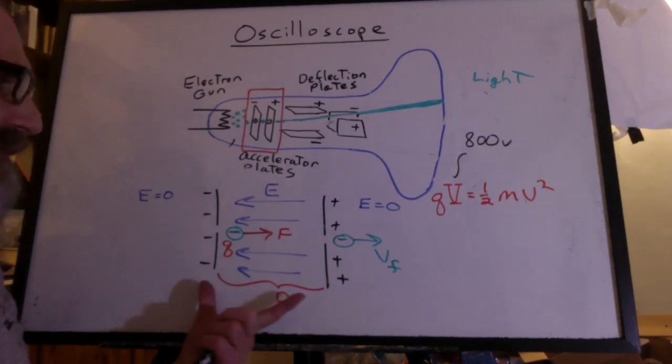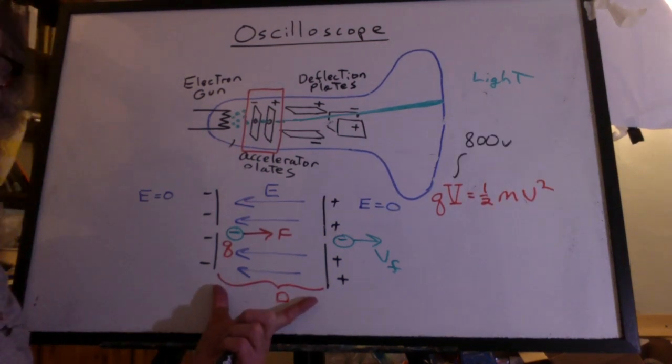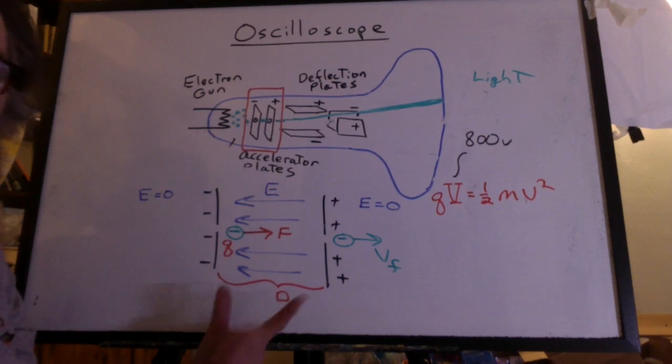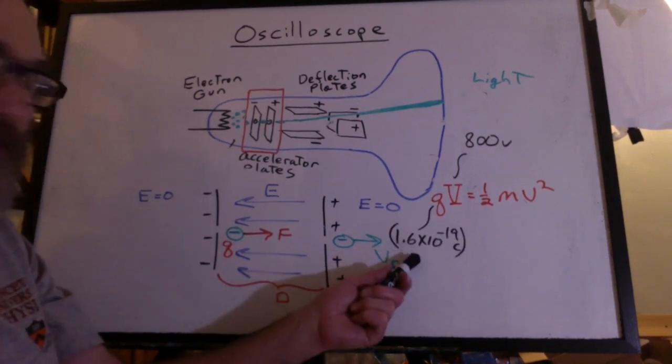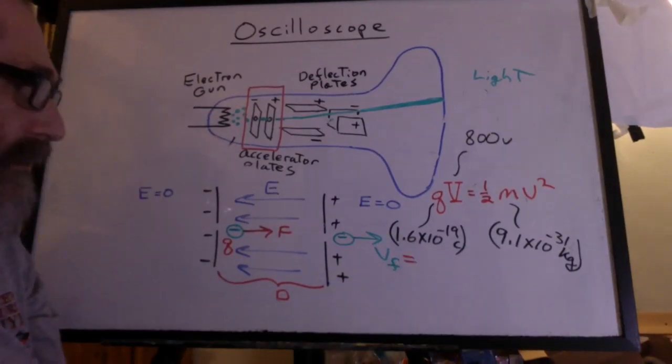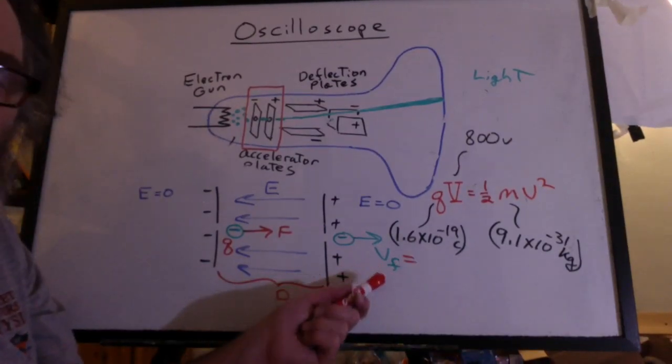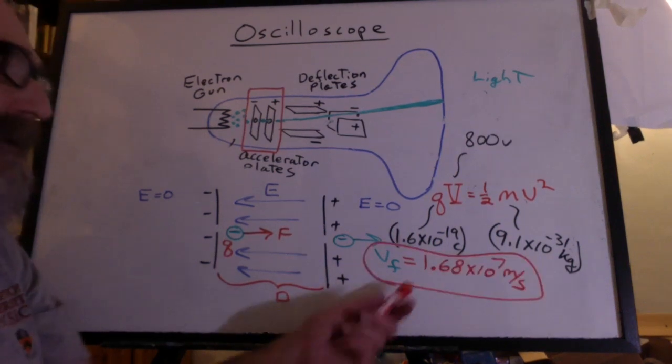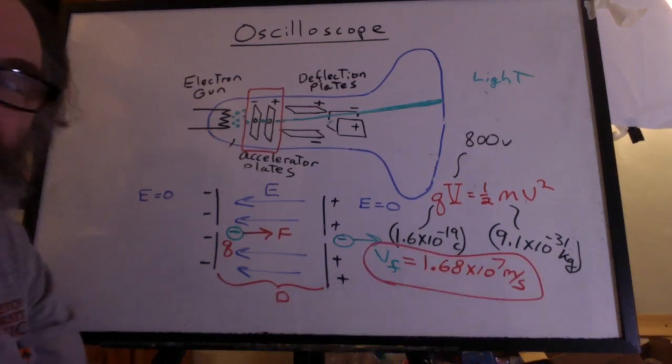So let's say we have an oscilloscope with accelerating plates with 800 volts across the plates. It's not unusual. The charge on an electron, that's the mass of the electron. You can now solve for this final velocity. And we get 1.68 times 10 to the 7th meters per second.